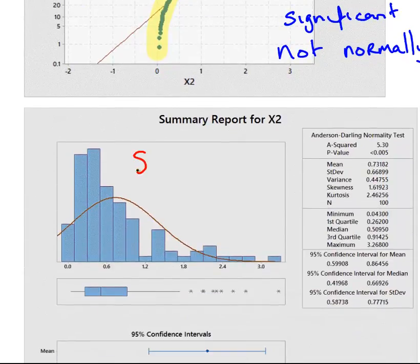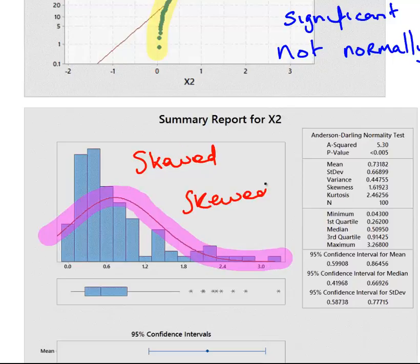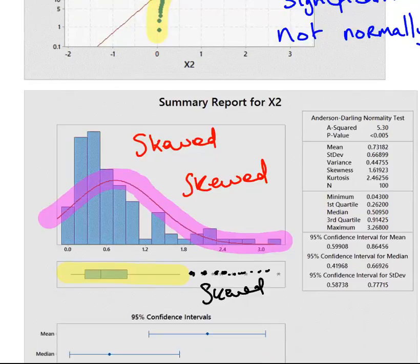That's the Anderson-Darling test and the QQ plot. Now, just the histogram alone, skewed. You can sort of see really up against the left-hand side. And also, this bell curve here, that's also skewed. Again, that's not centered at all. So skewed and skewed. Skewness there.